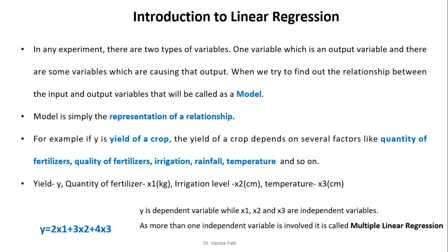In any experiment, there are two types of variables. One variable is an output variable, and there are some variables which are causing that output. When we try to find out the relationship between the input and output variable, that will be called a model. A model is simply a representation of a relationship.